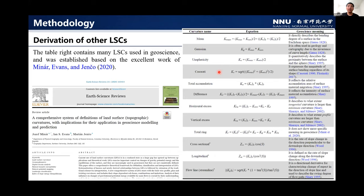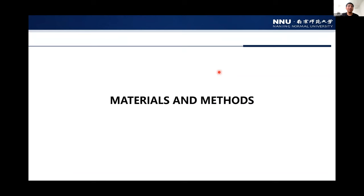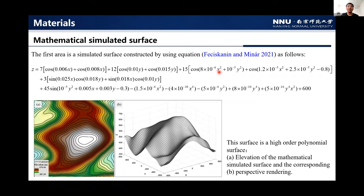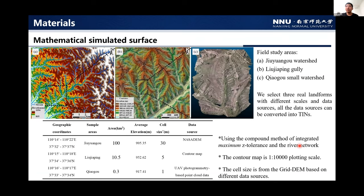The third part covers materials and methods. The first study area uses a simulated surface constrained by an equation — a high-order polynomial surface. We also selected three landforms with different scales and data sources. All data sources can be converted into TINs. For the first area, we use NASA DEM, converted into TINs using the maximum z-tolerance and zero network method. For the second area, we use a contour map at 1:1,100 plotting scale, which can also be converted into TINs. The third area is based on UAV photogrammetry point cloud data. Cell sizes are derived from the grid DEM based on the different data sources.